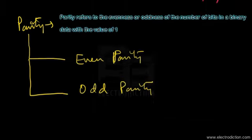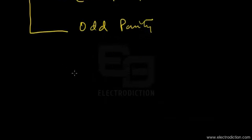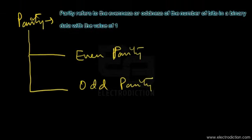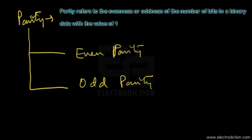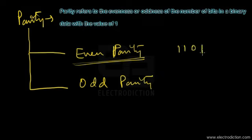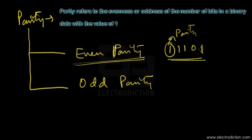In this concept, an extra bit is attached to a number. If the system works under even parity and we have binary data of one one zero one, then the parity generator at the transmitting end attaches an extra parity bit at the beginning of the data to make the total number of ones even. If the number of ones is already even, the parity bit attached will be zero.